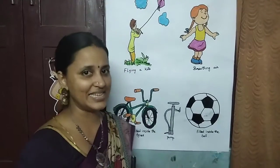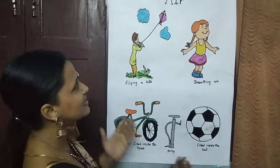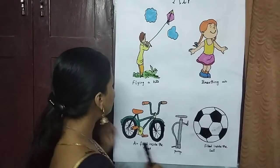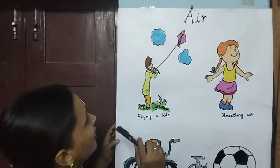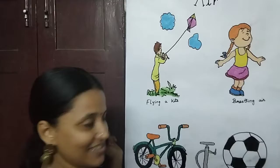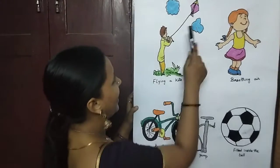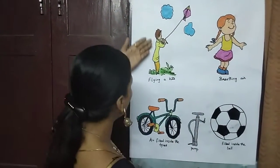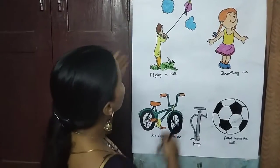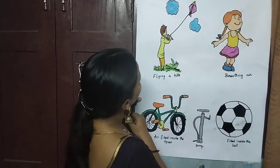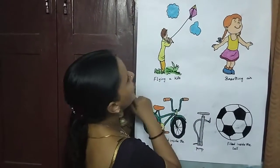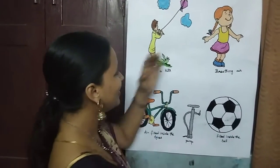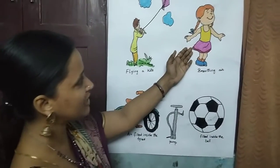Let us see what are the ways we can feel the air. You can feel the air while flying a kite, because the air moves the kite and the kite flies. The boy is flying a kite where he will feel the air is moving the kite. Then this I have already explained to you.